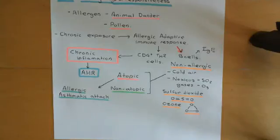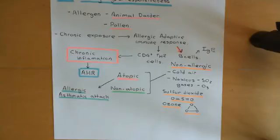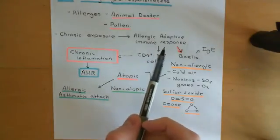Welcome back to this next video in which we are discussing asthma and anti-asthmatic drugs. We've now discussed the core overview of the pathophysiology of asthma. What happens fundamentally is that you launch allergic adaptive immune responses against some allergen which you are continuously breathing in little amounts of, so you get chronically exposed to this allergen, and what it then triggers is an allergic adaptive immune response chronically.